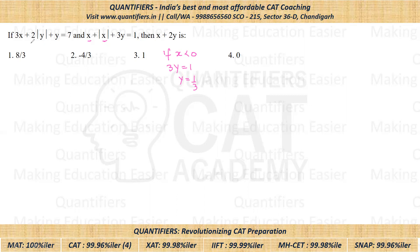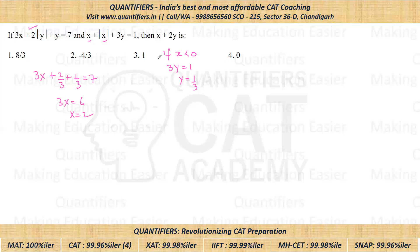Now if I put Y equal to one by three in this first equation, I'll get three times X plus two by three plus one by three is equal to seven, which will give three times X is equal to six and X is equal to two. Now mind you, we assumed that X is negative, but we are getting X to be positive. That means our assumption is wrong — X cannot be negative.